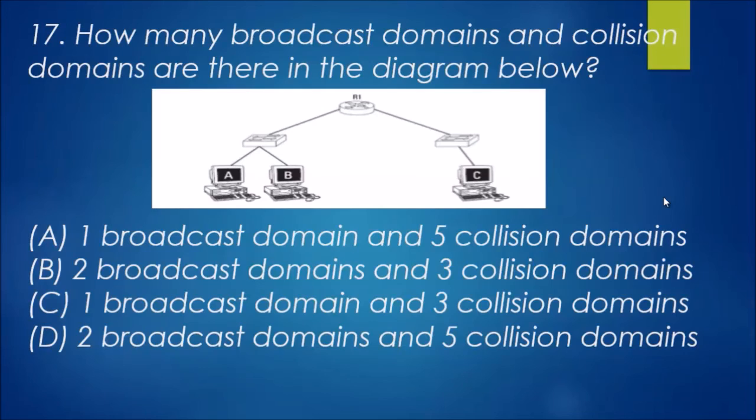Now a bit of an extension of that original question. How many broadcast domains and collision domains are there in the diagram below? Let's have a look at this one. The best way to do it is we've got a router here, so it's using two ports there. That means there's at least two broadcast domains - that's one broadcast domain and that's another.